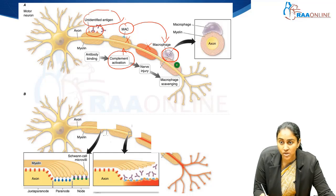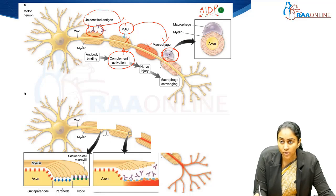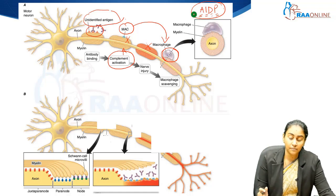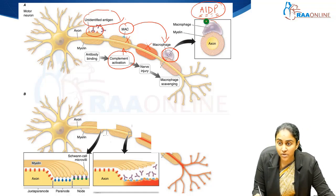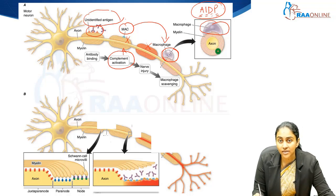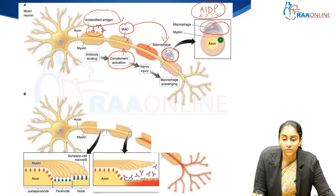This is what typically happens in patients with AIDP — acute inflammatory demyelinating polyneuropathy. The brunt of the damage is targeted at the myelin sheath. Here you can see that complement-mediated and macrophage-mediated attack happens wholly on the myelin sheath surrounding the axon, resulting in all the classical features that accompany patients with AIDP both clinically as well as electrodiagnostically on nerve conduction studies.